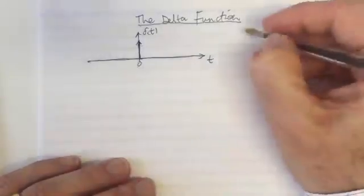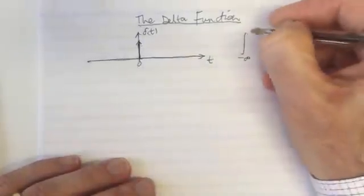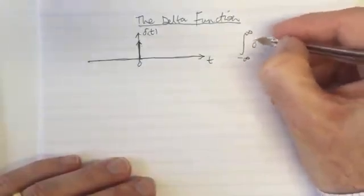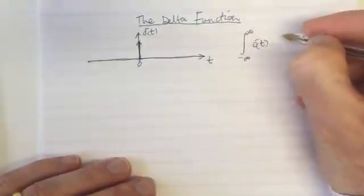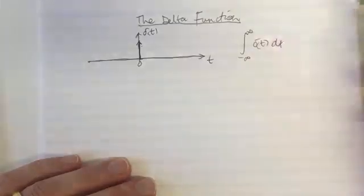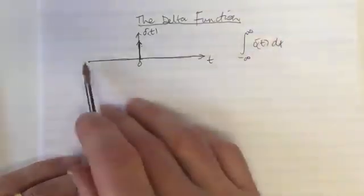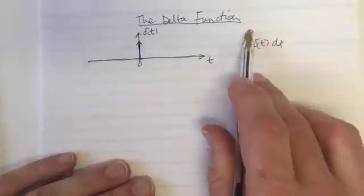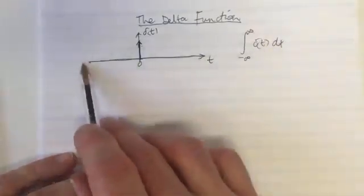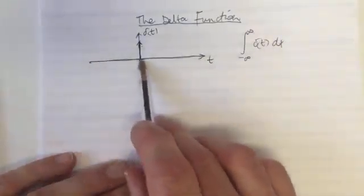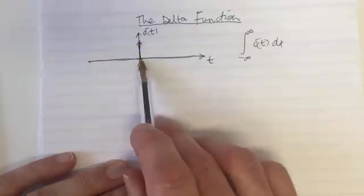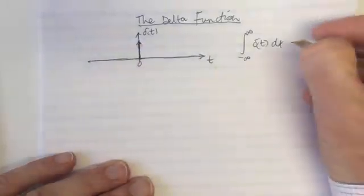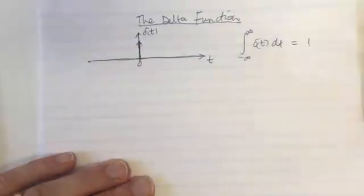What does that mean in mathematics? If we integrate the delta function over t — adding up the area for all values from minus infinity to infinity — it's zero everywhere except exactly at zero, where the area equals one. So this integral equals one.